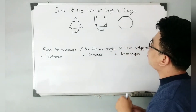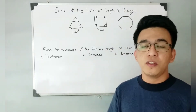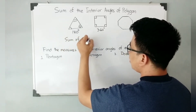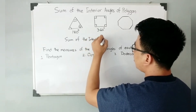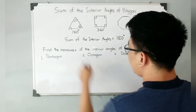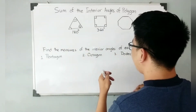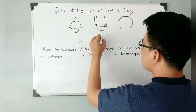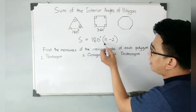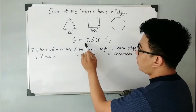What if we now have polygons with more sides? That's why this topic will help you find the sum of the interior angles of a polygon using a formula. Here's the formula: the sum of the interior angles, which we can write as S, is equal to 180 degrees times N minus 2. S is the sum of the interior angles, while N is the number of sides of a given polygon.